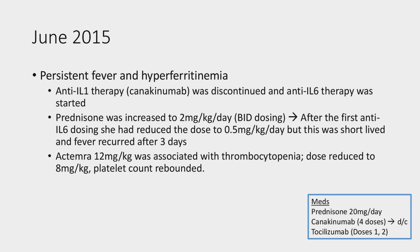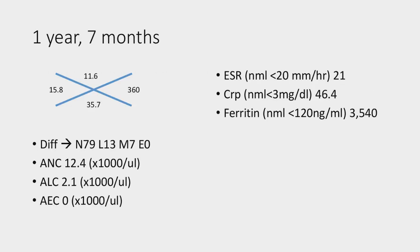Two months later, she was admitted again for persistent fever and hyperferritinemia. At this time, my partner stopped the canakinumab — she had been on it for four doses without significant benefit — and started her on anti-IL-6 therapy. The steroid was increased to two milligrams per kilogram per day. Interestingly, after the first anti-IL-6 dose, she was able to reduce the dose to 0.5 milligrams per kilogram per day. Unfortunately, this seemed short-lived as she had a fever three days after her first tocilizumab dose.